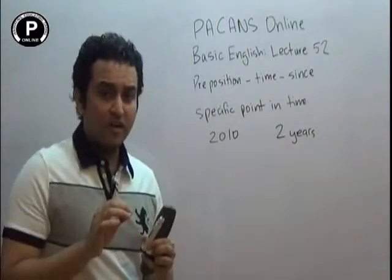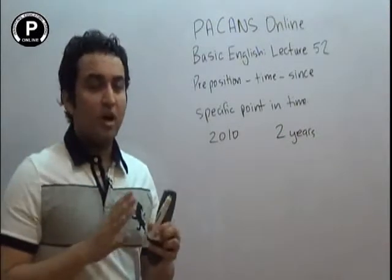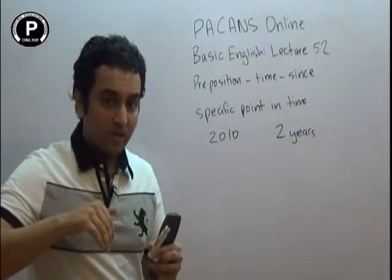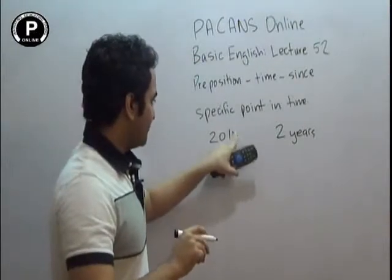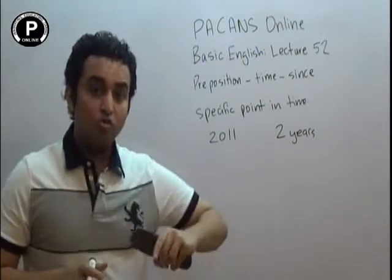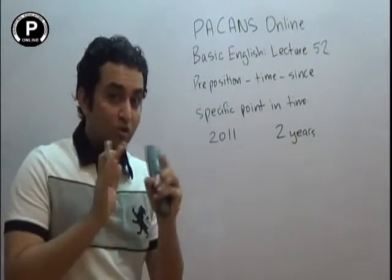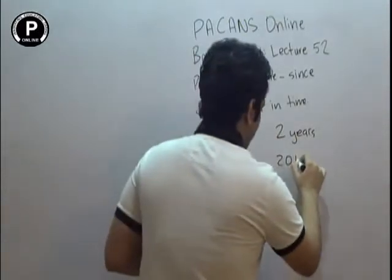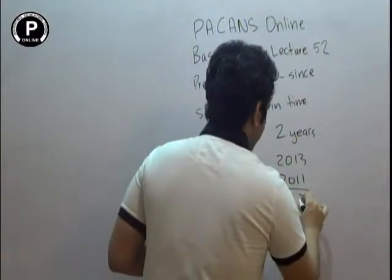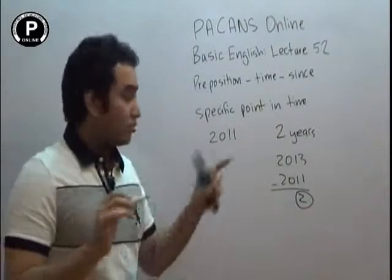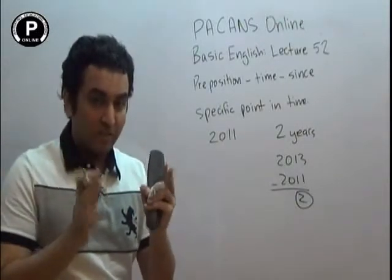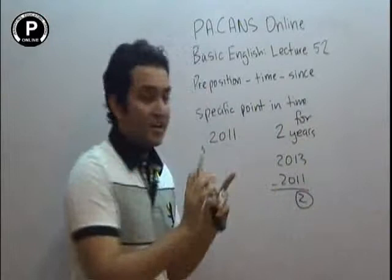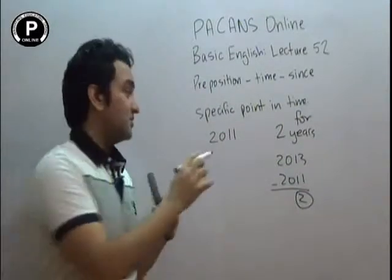These two years you calculate. What did you do? आपने आज का टाइम और जब से आप कर रहे हैं उसको calculate किया है — दो चीजें आपके पास थी, दो dates थी। एक 2013 था और 2011 था, तो तब जाके आपका दो साल निकला। जब दो dates involve हो जाती हैं किसी चीज को calculate करने के लिए, तो हम वहाँ 'for' लगाते हैं। और जब सिर्फ एक date होती है — specific point in time होता है — तो हम 'since' लगाते हैं।